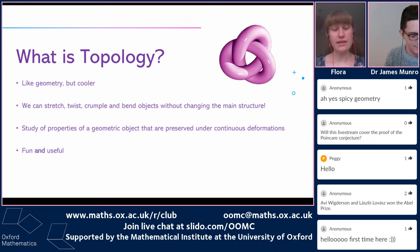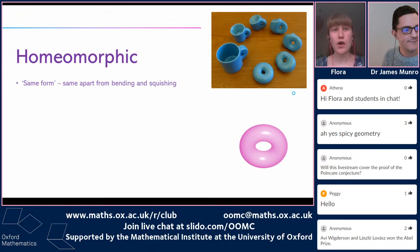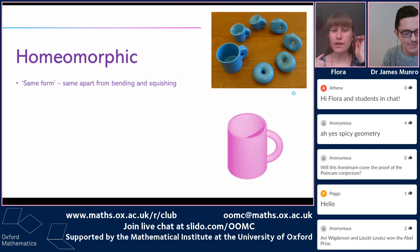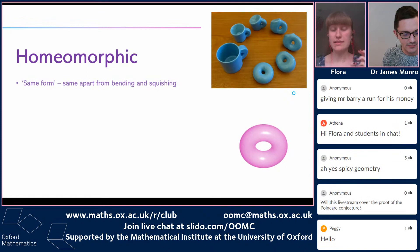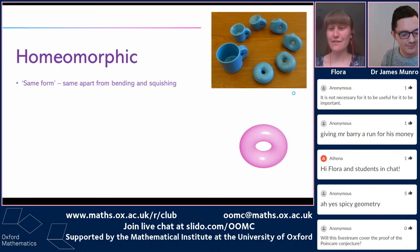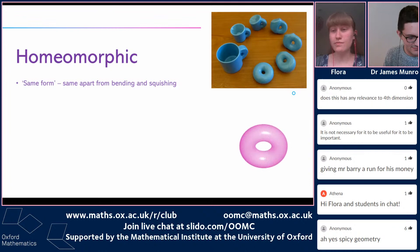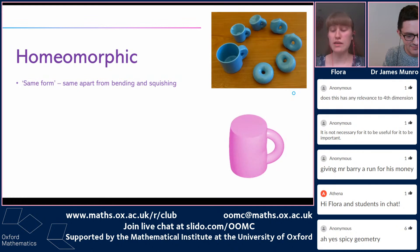A key concept in topology is the idea of spaces which are homeomorphic to each other. The word homeomorphic comes from Greek — homeos meaning similar or the same, and morph meaning shape or form. So two spaces are homeomorphic if they are the same apart from bending and squishing. There is a proper rigorous mathematical definition, which I'll include in further reading. When I say a space in topology, it can be general — it can mean anything like a line, a table, a person, or a sphere.